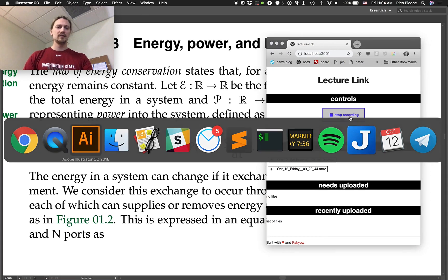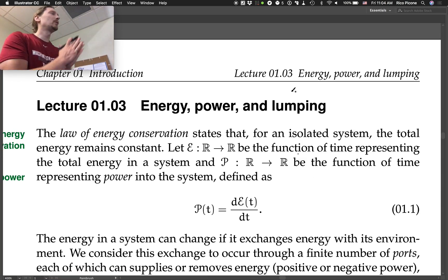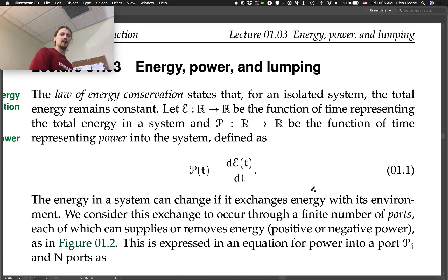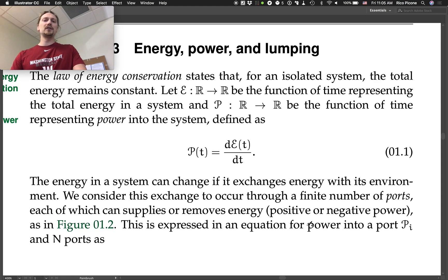Alright, so Lecture 1.3: Energy, Power, and Lumping. We begin with some familiar ideas of energy conservation. The law of energy conservation states that for an isolated system, the total energy remains constant. Let E be the function of time representing the total energy in a system, and P being the function of time representing power into the system, defined as the time rate of change of the energy in the system.